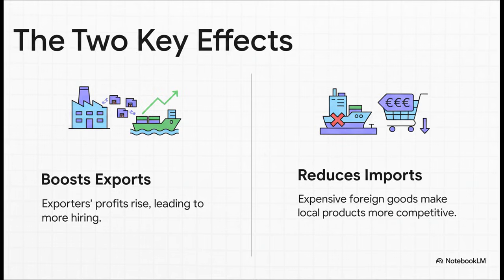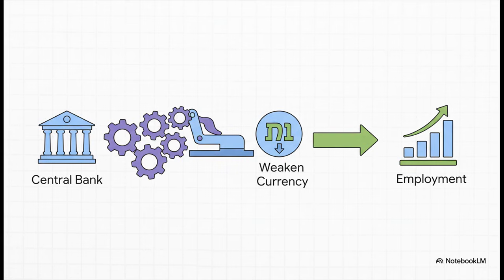It really boils down to two huge effects. One: it boosts exports, because a company selling something for $100 gets more local money back in their pocket, encouraging them to hire. Two: it reduces imports, because that new smartphone or German car just got more expensive. Of course there's a trade-off — more expensive imports can lead to inflation. But if your main goal is creating jobs, both effects lead to more local employment. This economic logic is exactly why a country's central bank might actively and intentionally try to weaken its own currency. It's not a sign of failure — it's a strategic tool to fight unemployment.